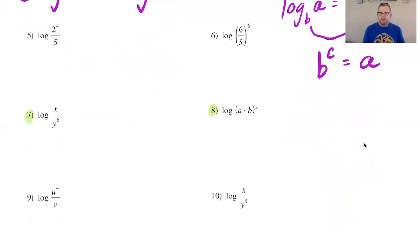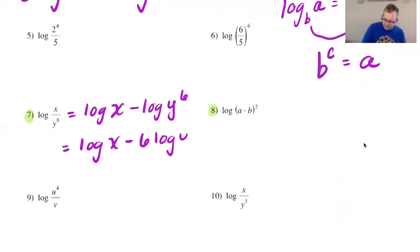Number seven I see that I have the log of a quotient so that will give me log of x minus the log of y to the sixth power. Log of x is good as it is however we want to bring that six down in front of the log y and there you have it.